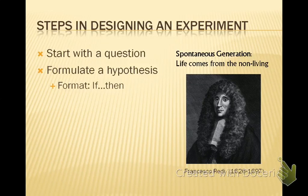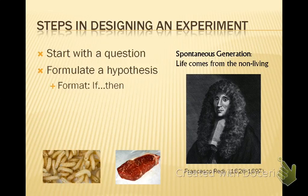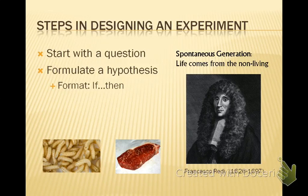Francisco Redi did not believe in spontaneous generation, so he started with the question: where does life come from if it doesn't come from the non-living? He specifically looked at the belief that maggots came from rotting meat. This belief came from the fact that meat was sold in open-air markets — they would butcher an animal, hang it up, and people wouldn't see the flies land on the meat, just the maggots appearing a couple days later. So they assumed the rotting meat was producing the maggots.